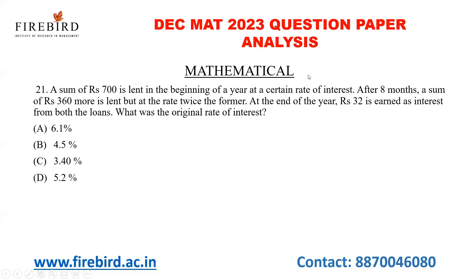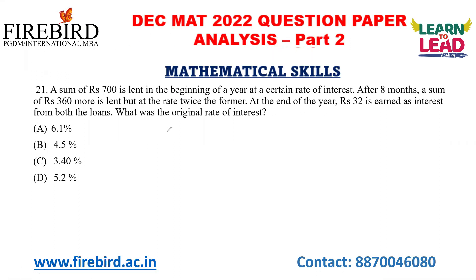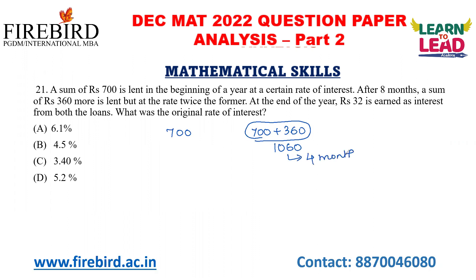Now let us go to this video. See the first question. A sum of Rs. 700 is lent at the beginning of the year at a certain rate of interest. After 8 months, a sum of Rs. 360 more is lent — that is, 700 plus 360 — but at the rate of twice the former. So Rs. 1060 is provided for only 4 months and Rs. 700 is provided for the whole 12 months. At the end of the year, Rs. 32 is earned as interest from both loans. What was the original rate of interest?